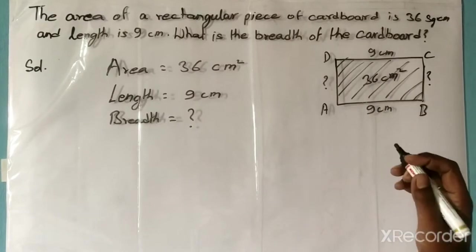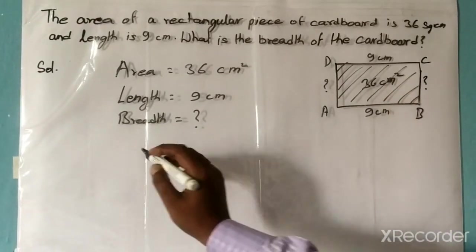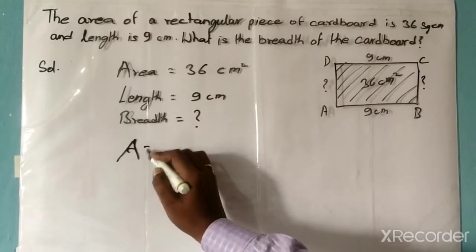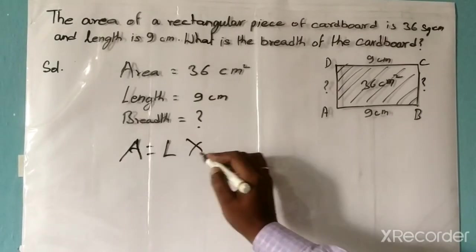How to solve this? We know how to find the area of a rectangle. Area of a rectangle is equal to length times breadth.